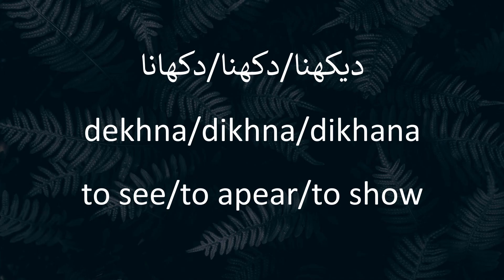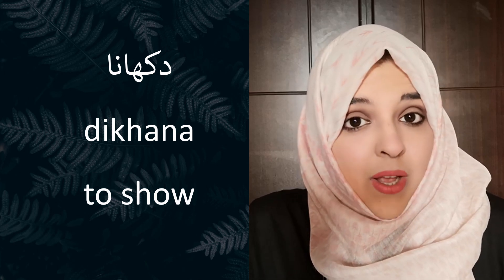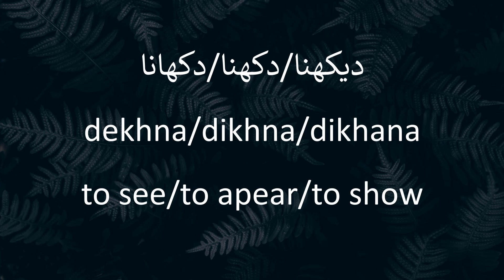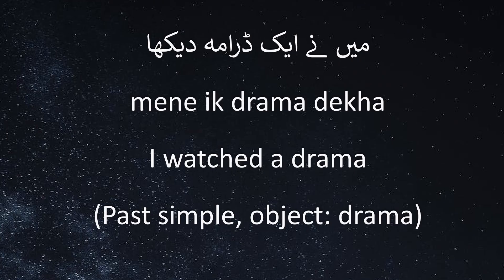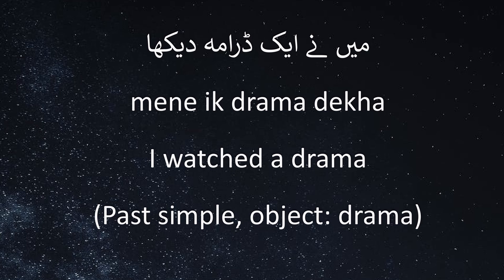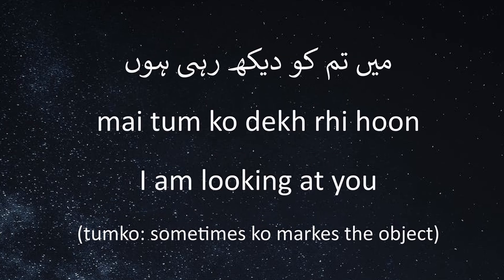Our first group is Dekhna, Dikhna, and Dikhana. Dekhna means to see, to look, to watch. Dikhna means to appear. Dikhana means to show. These verbs are used in daily life. Dekhna is a transitive verb — it requires an object. I'll use it in a past simple sentence: 'Maine ek drama dekha' — I watched a drama. Next: 'Main tumko dekh rahi hoon' — I'm looking at you, I'm watching you. This is the present continuous tense.